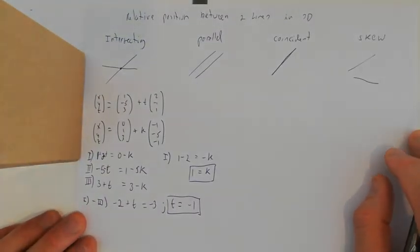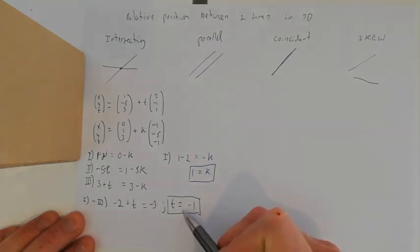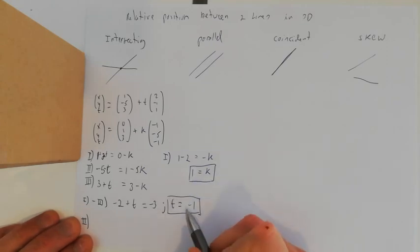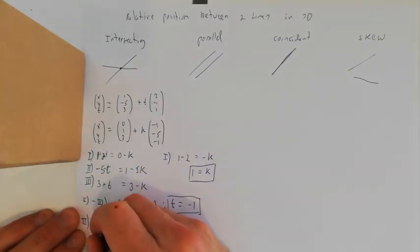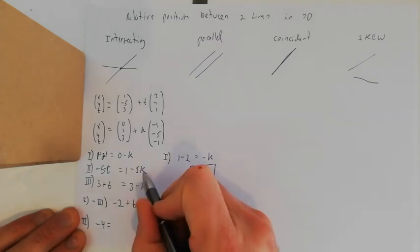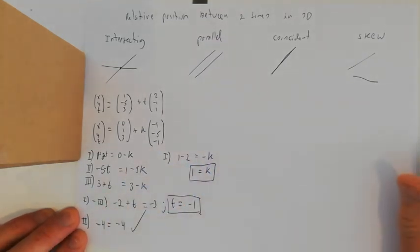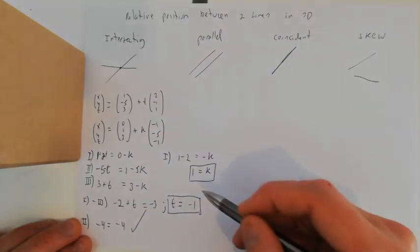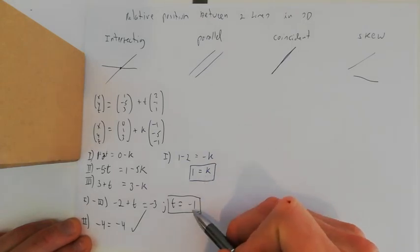I've used equations 1 and 3. Now I plug t = −1 and k = 1 back into equation 2 to verify: left side gives −5 − (−1) = −4, right side gives 1 − 5 = −4. Equation 2 is satisfied, so the system has a unique solution with k = 1 and t = −1, meaning the lines intersect.